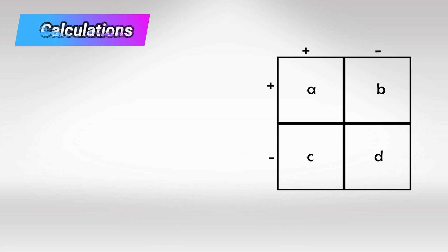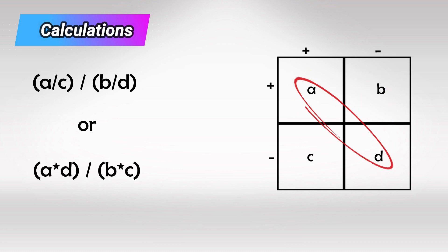To calculate odds ratio, first we have to draw the 2x2 square, and then we use A over C divided by B over D. Or we can use A multiplied by D over B multiplied by C.